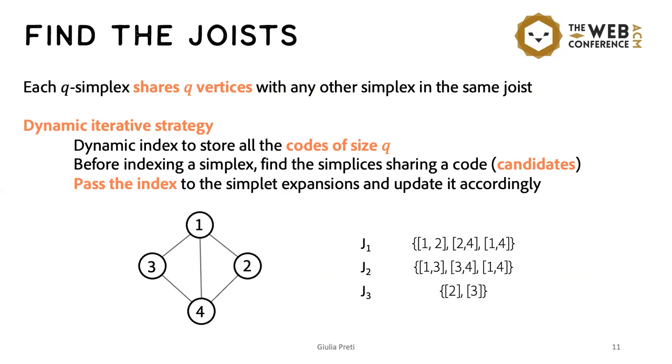In particular, if the simplet contains the joist of a q-simplex and the inflate adds such q-simplex, the joist is subsumed by the simplex and therefore should be removed from the set of joists of the expansion. So here, for example, this simplet contains the three joists on the right. And if we apply inflate and add this triangle, we end up with only two joists remaining.